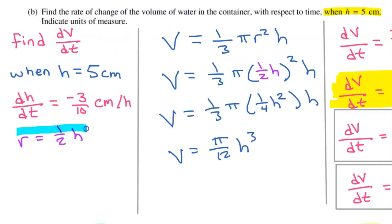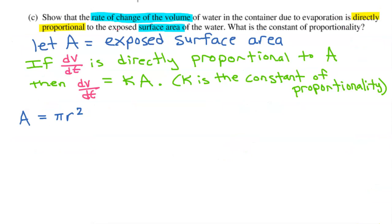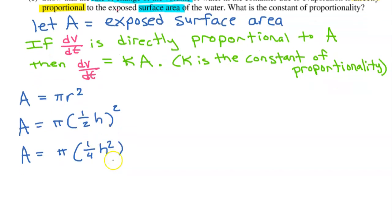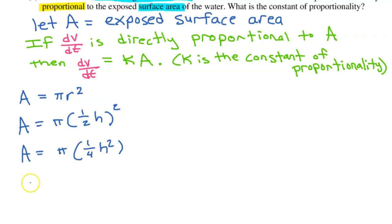Remember back in Part B, we found this relationship between r and h. Let's make this substitution. So I can write area is equal to pi times, and I can put one-half h instead of r. So my formula for the exposed surface area will be pi times one-fourth h squared. I'm just squaring each of these factors. And pi times one-fourth is just pi over 4. So this is pi over 4 h squared.